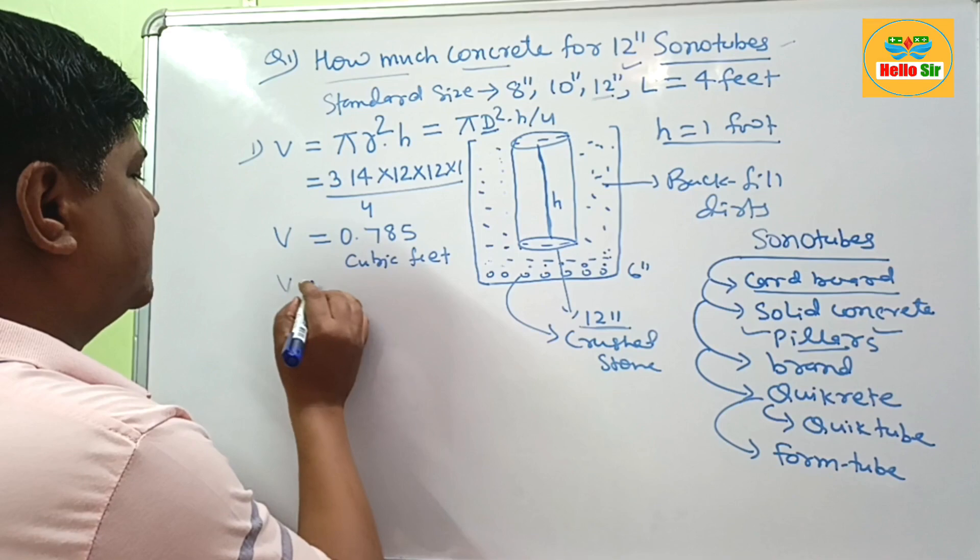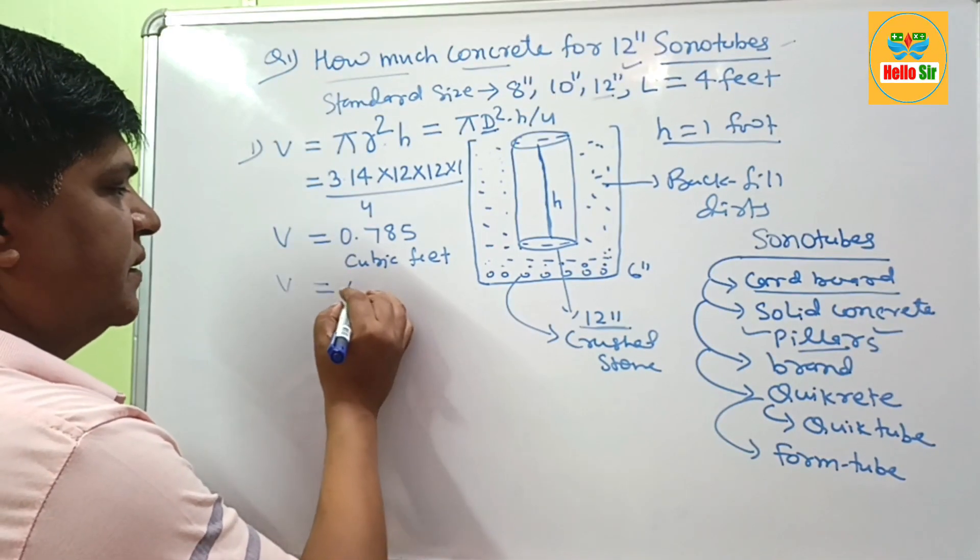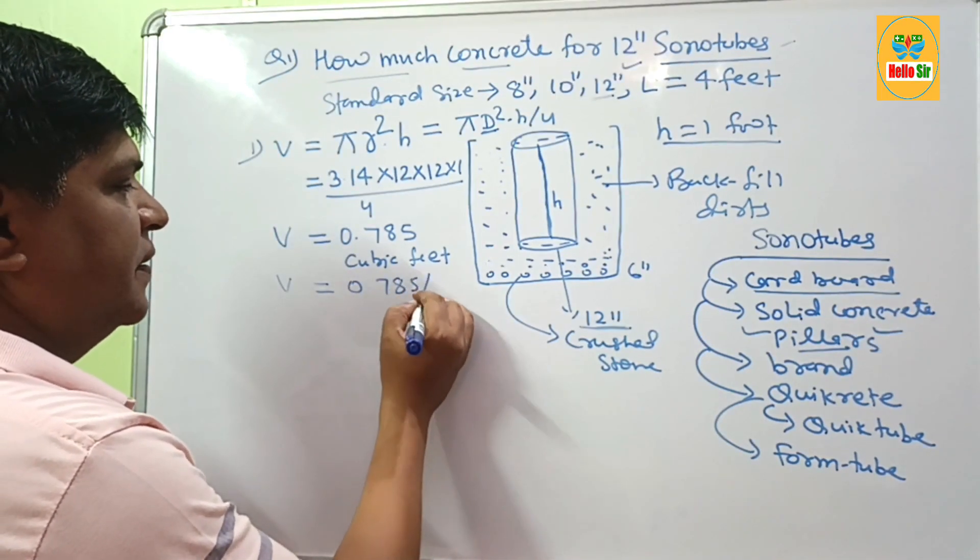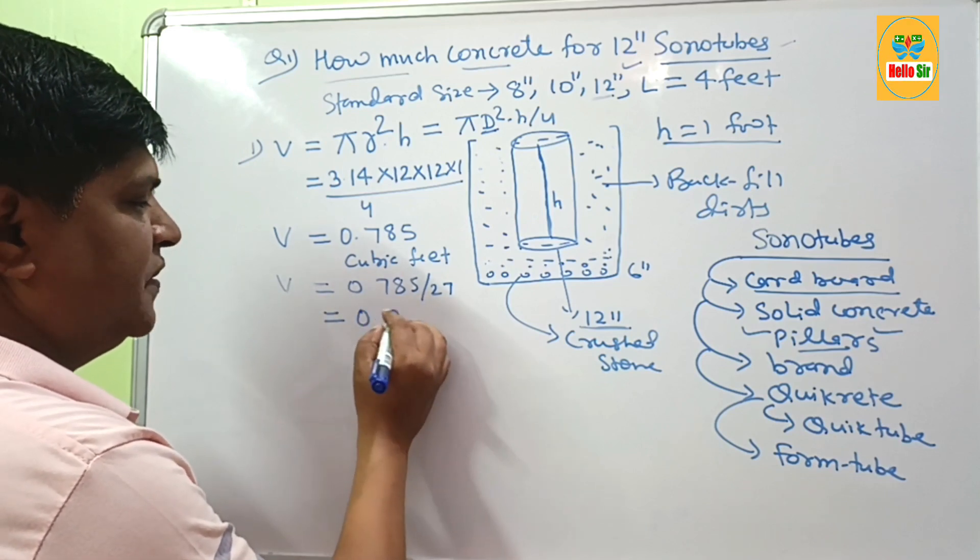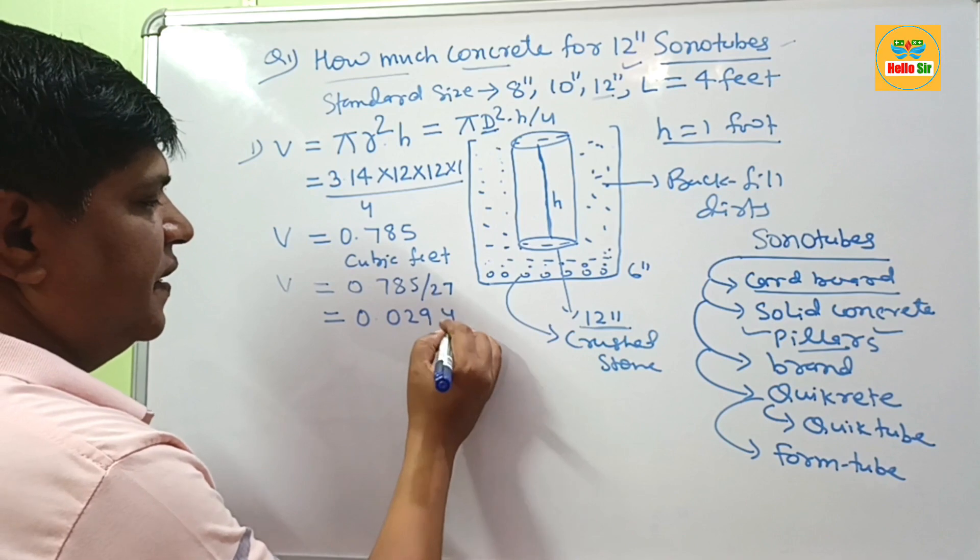And if you want to calculate this volume in cubic yards, divide by 27. In cubic yards, the volume of required concrete is about 0.029 yards.